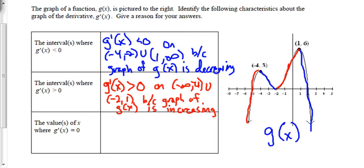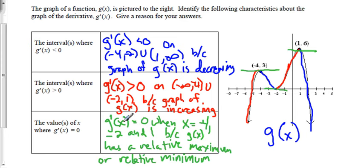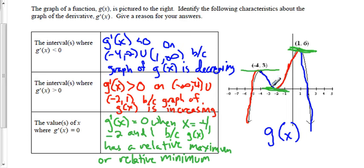The derivative equals zero when x = -4, x = -2, and x = 1. At x = -4, there's a horizontal tangent line. At x = -2, the function transitions from negative slope to positive slope, passing through zero at that relative minimum. At x = 1, the function goes from positive slopes to negative slopes, so the slope must pass through zero there.